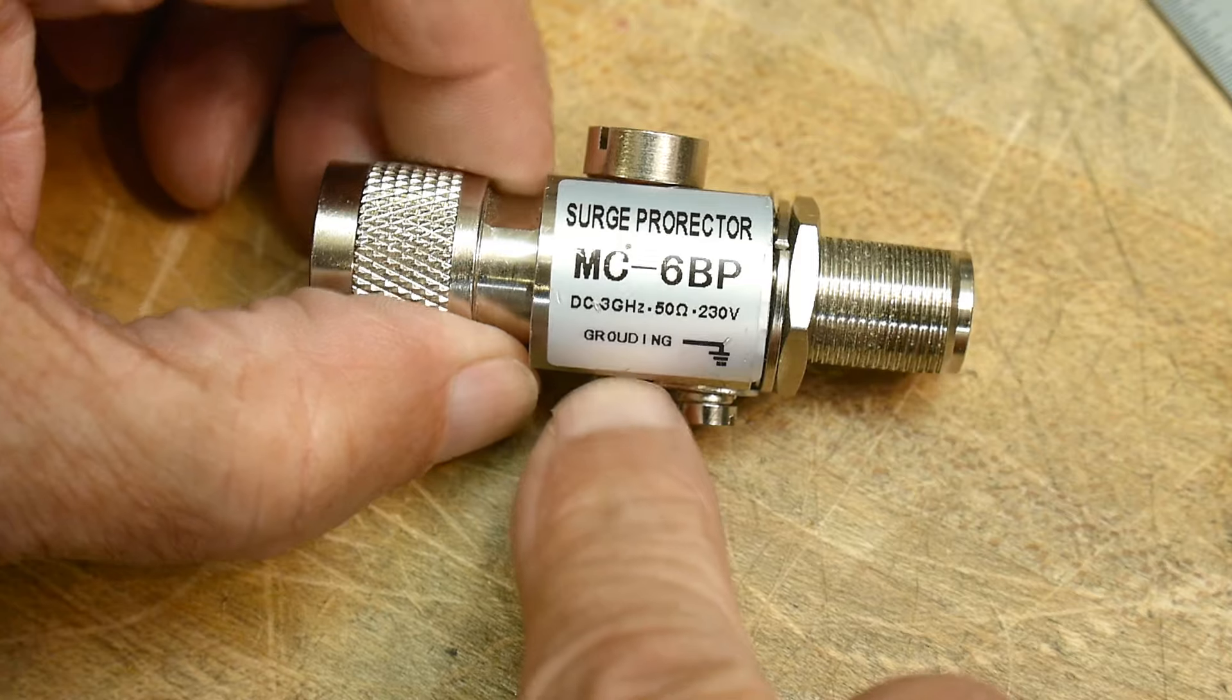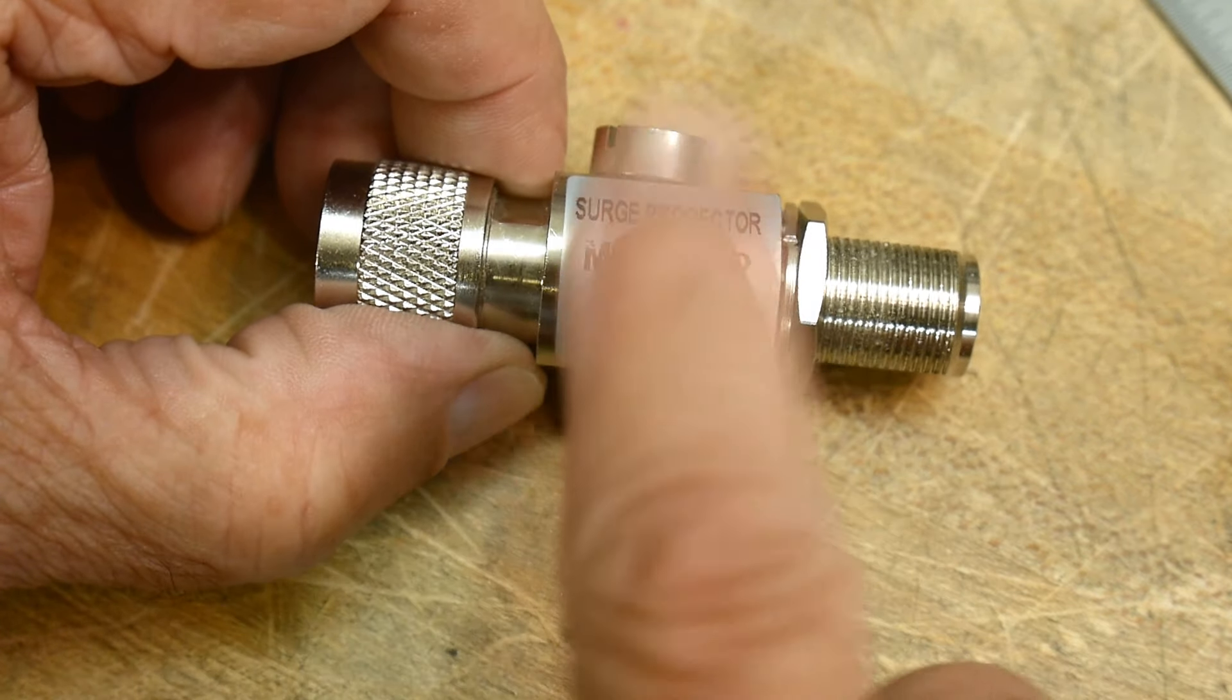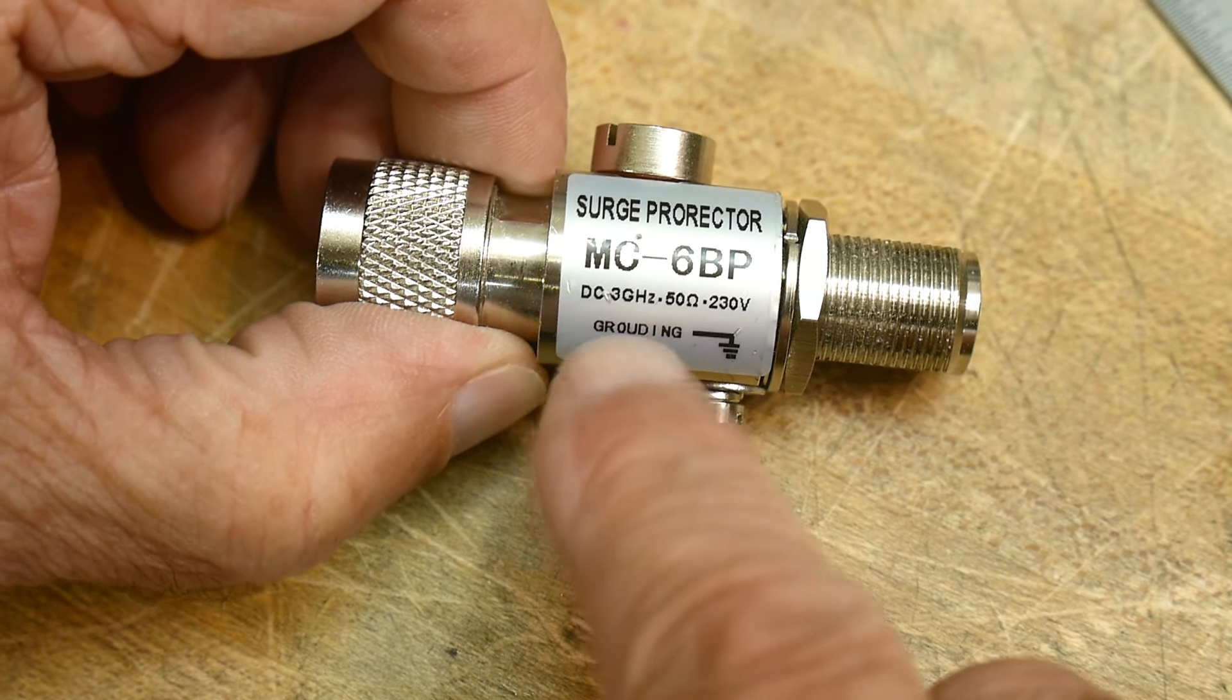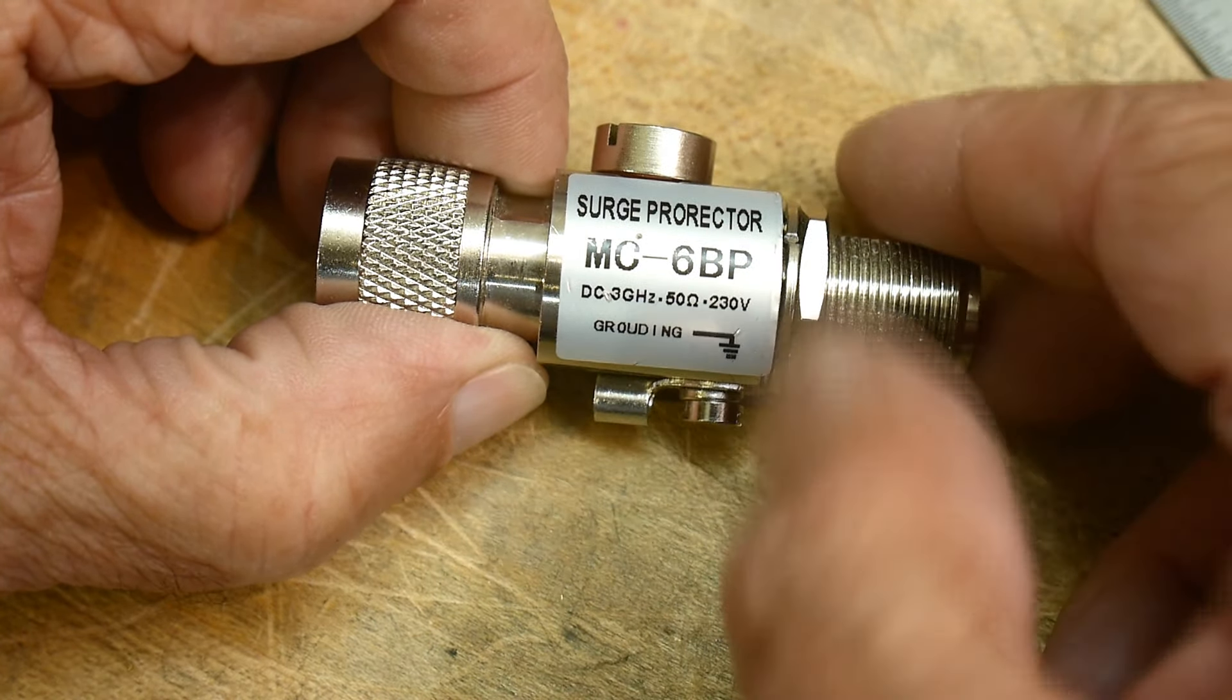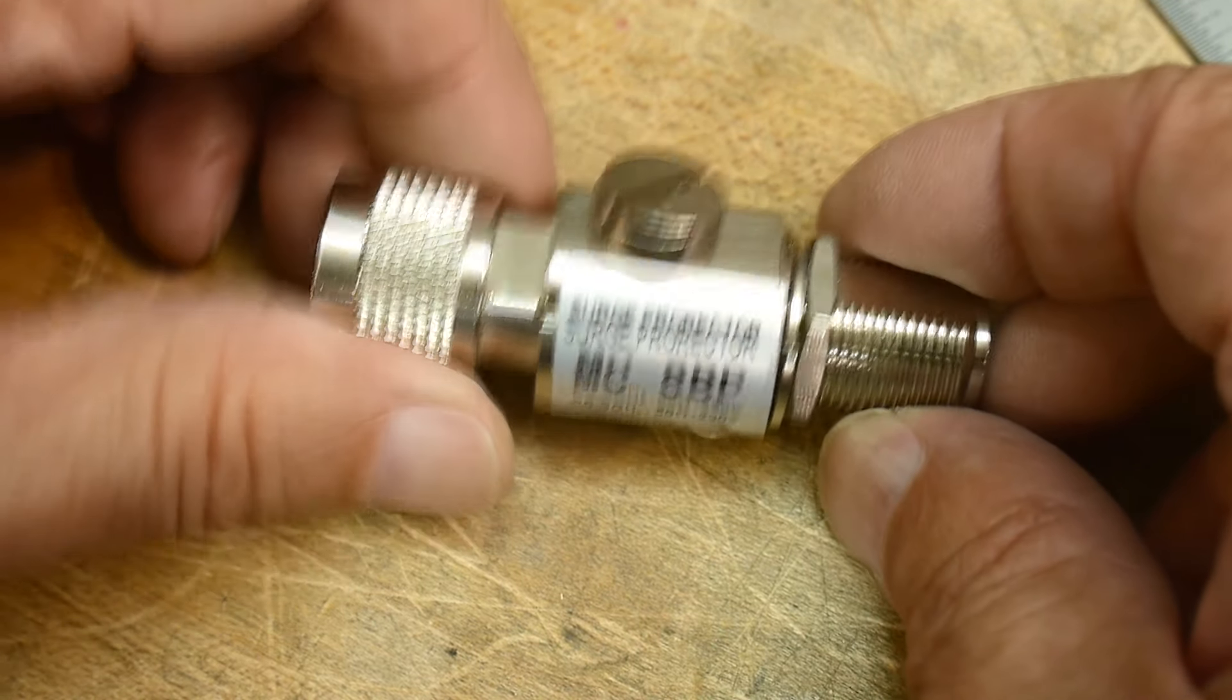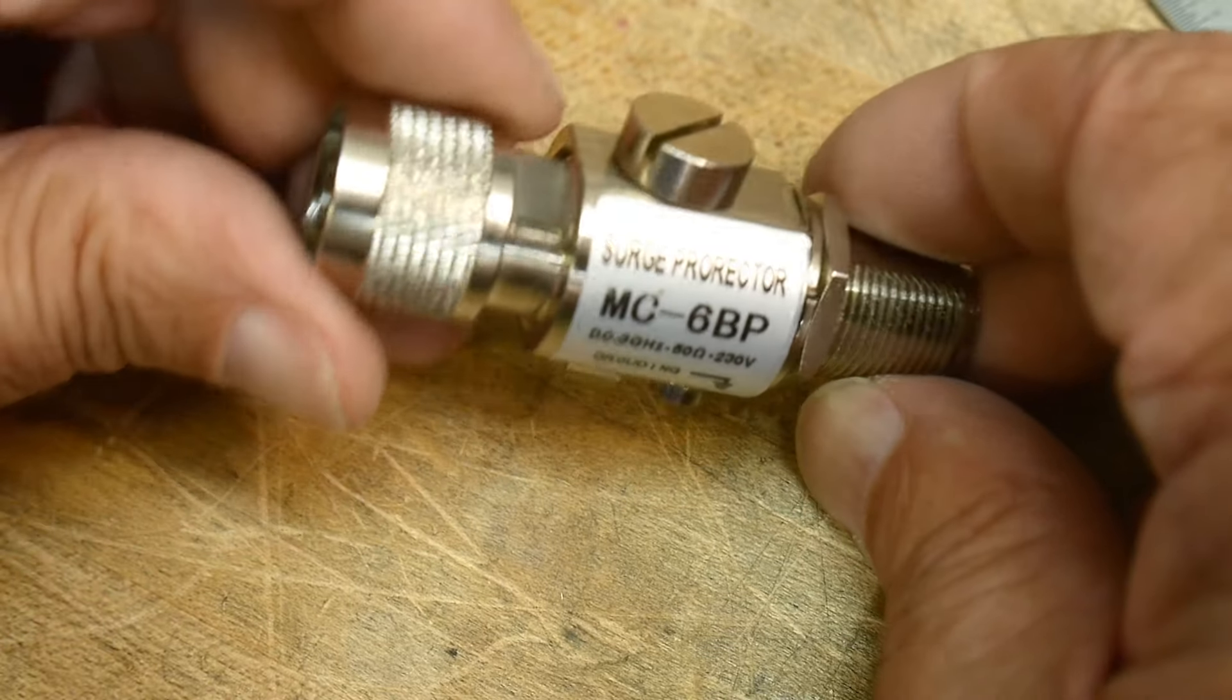All right, this thing is specified up to 3 gigahertz. I believe it would do that just fine. So DC to 3 gigahertz, 50 ohms, 230 volts surge protector. So yeah, there you go. Quick little video for the day.